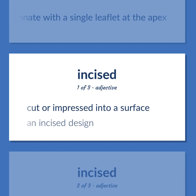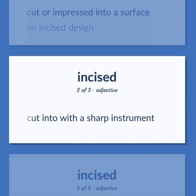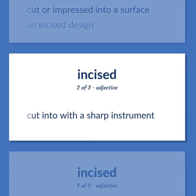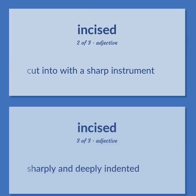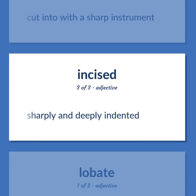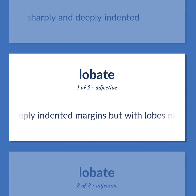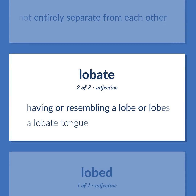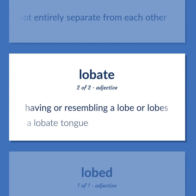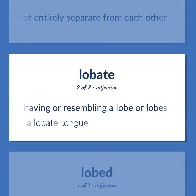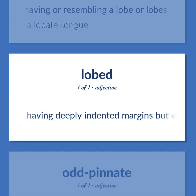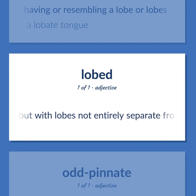Incised: Cut or impressed into a surface — an incised design. Cut into with a sharp instrument. Sharply and deeply indented. Incisoid: Having deeply indented margins but with lobes not entirely separate from each other. Lobate: Having or resembling a lobe or lobes — a lobate tongue. Having deeply indented margins but with lobes not entirely separate from each other.